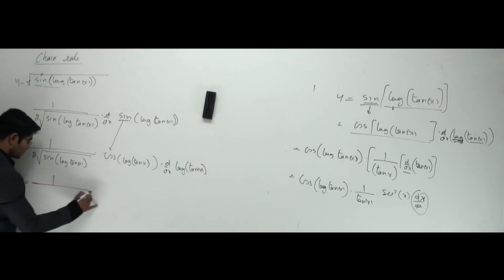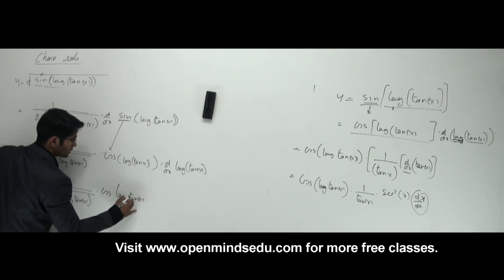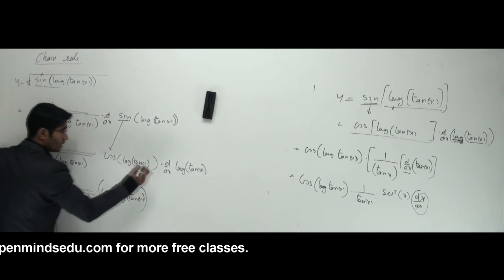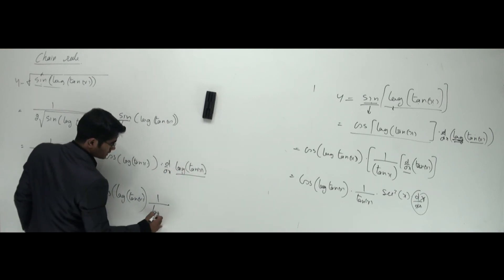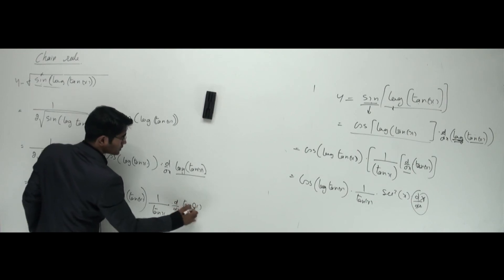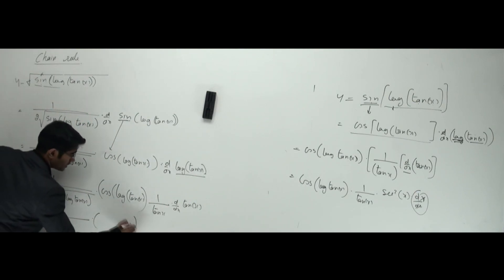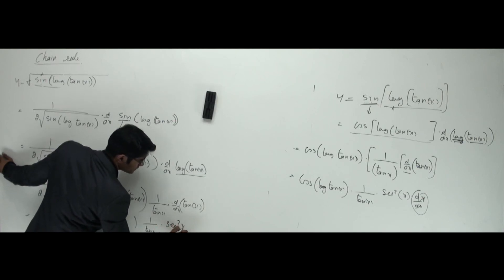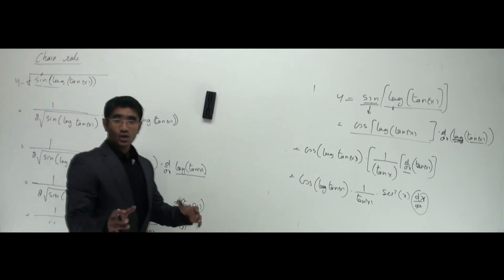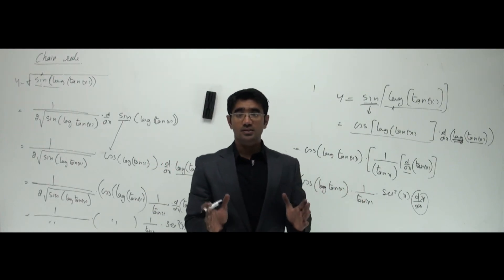Continuing, we have 1/(2√(sin(log(tan x)))) · cos(log(tan x)). Now we differentiate log(tan x): that gives 1/tan x. And finally, we differentiate tan x to get sec²x. So the full answer is 1/(2√(sin(log(tan x)))) · cos(log(tan x)) · (1/tan x) · sec²x. Break each chain from outermost to innermost until you reach x — that's the chain rule.